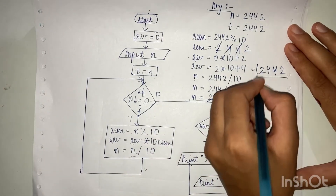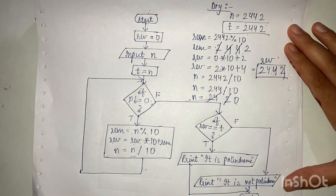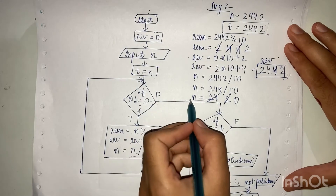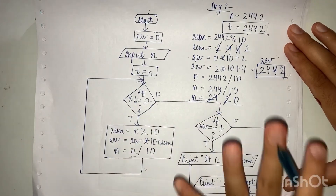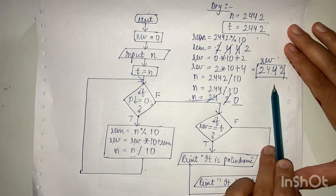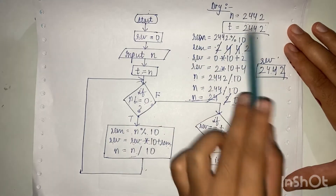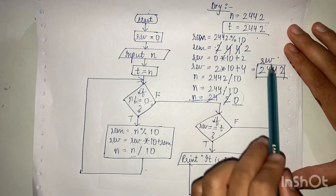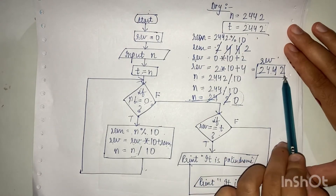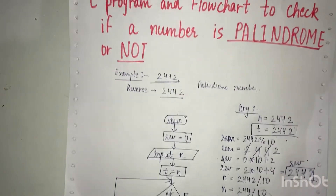The value of rev is 2442, which equals t. Now you understand why we stored n in temporary variable t — because after coming out of the loop, n is 0. We cannot compare the reverse with n, so we compare it with t, which holds the original number. Since rev equals t in this case, the message printed is 'it is palindrome'. I hope you understood the flowchart. Now I'll quickly write the code for you.